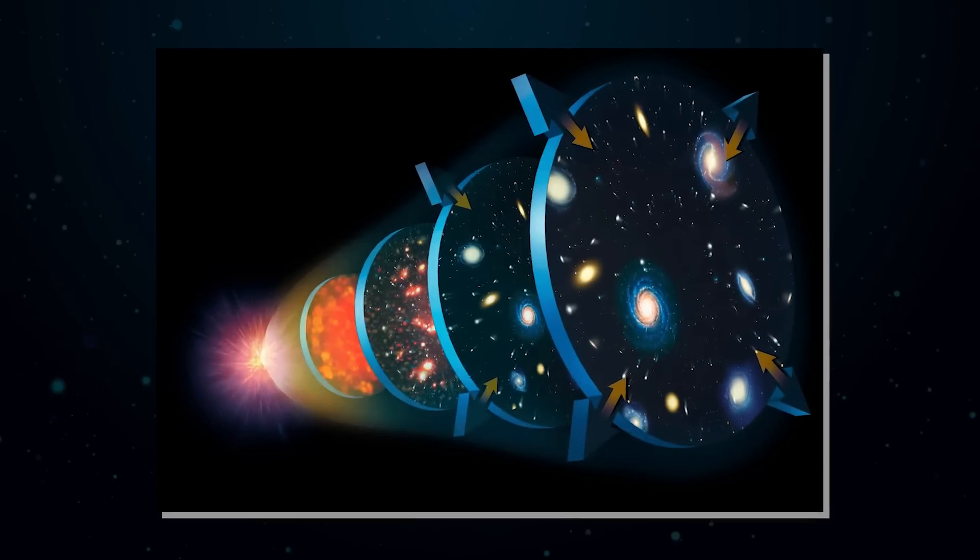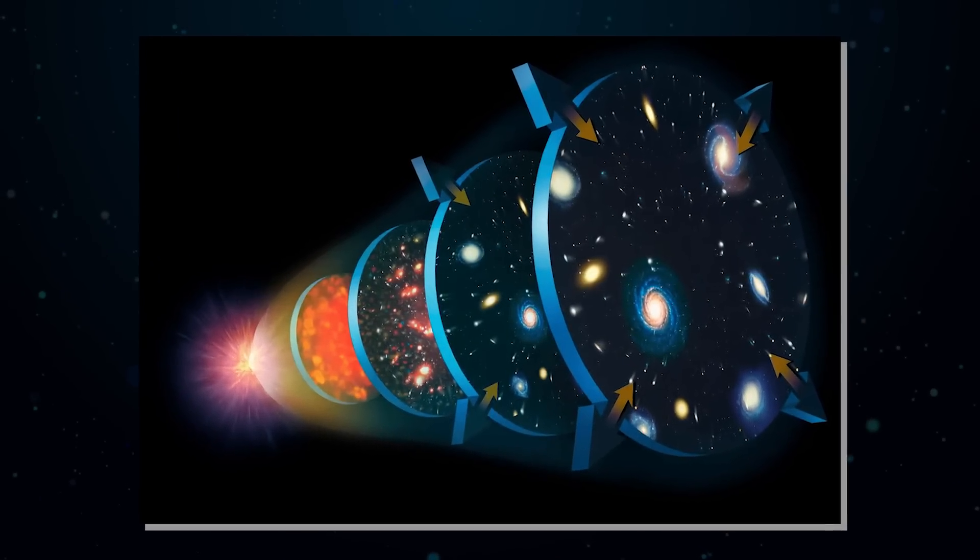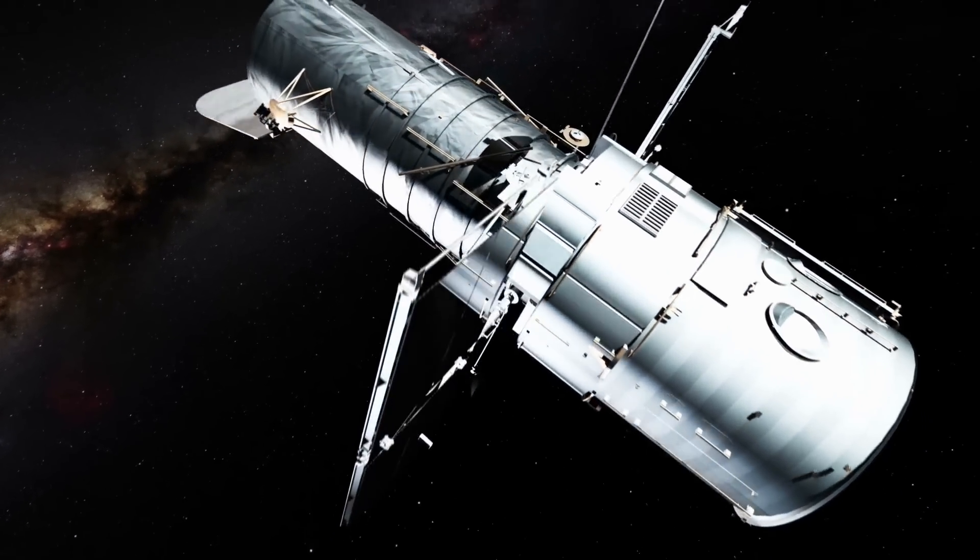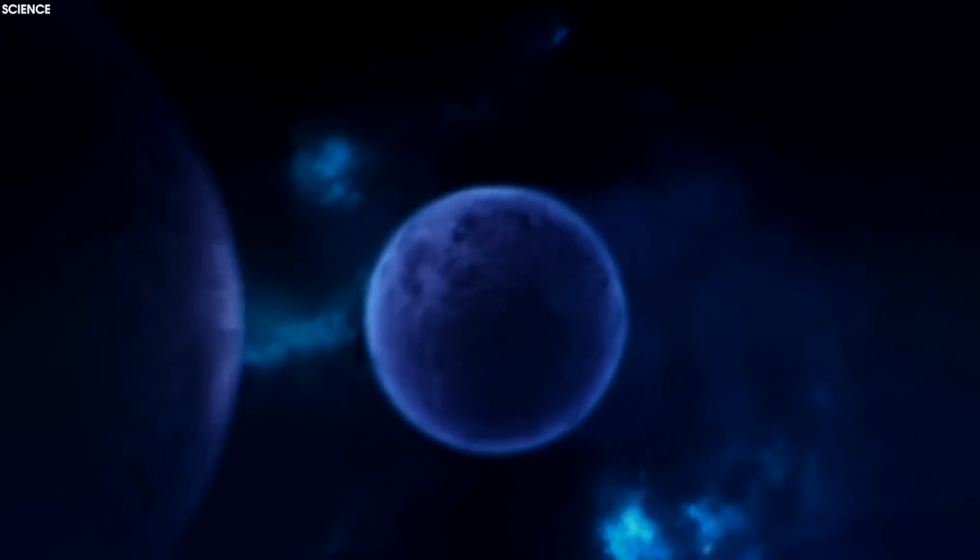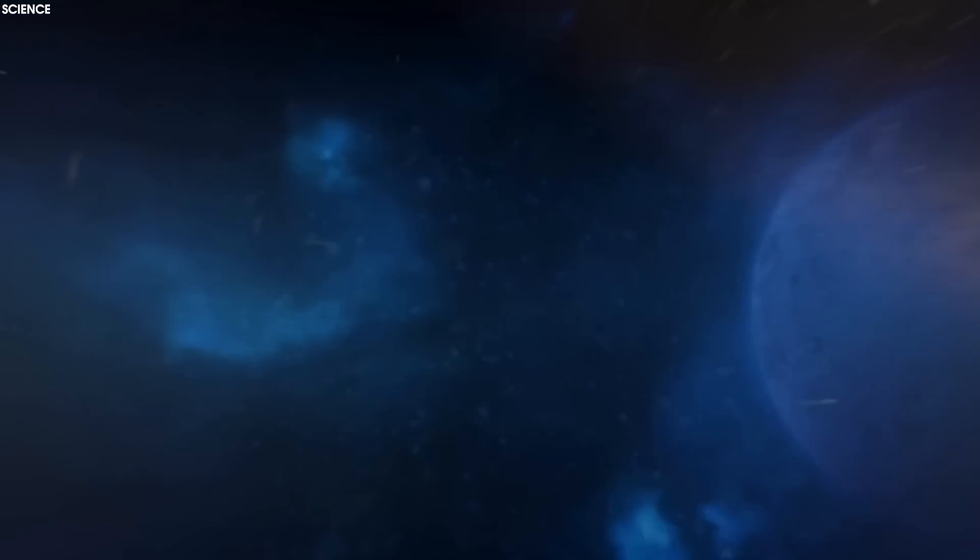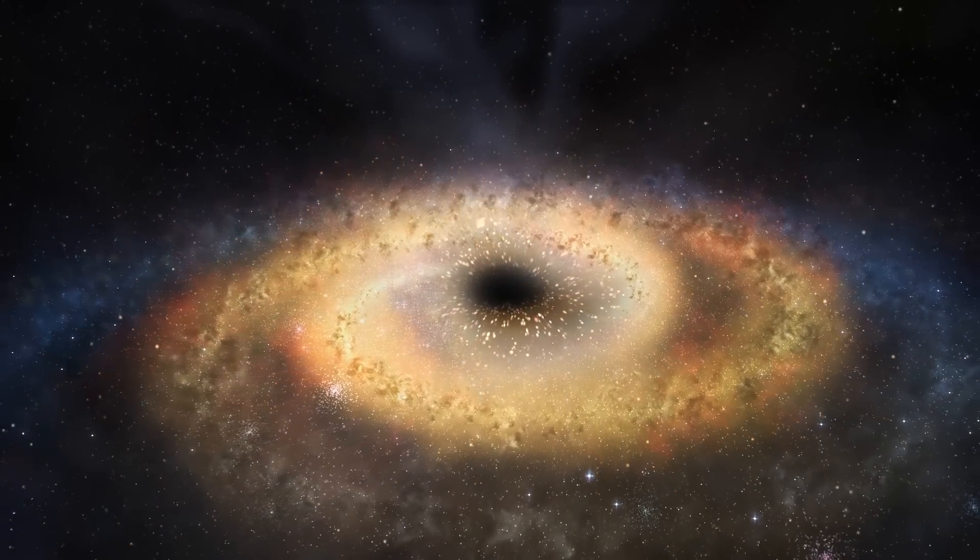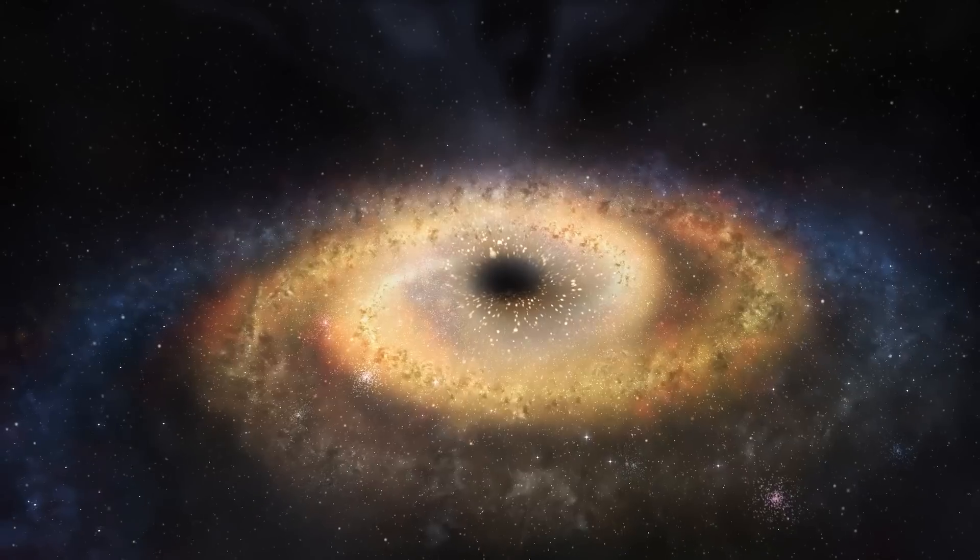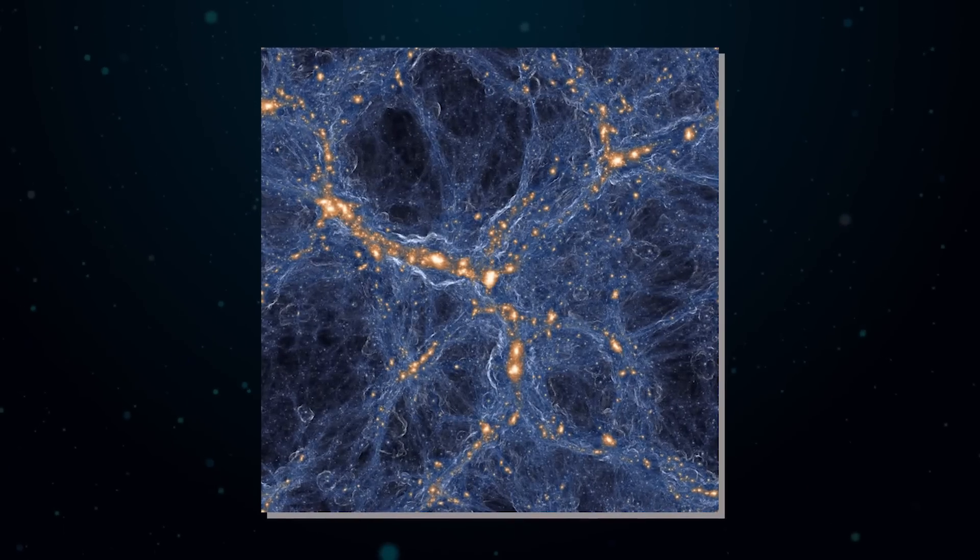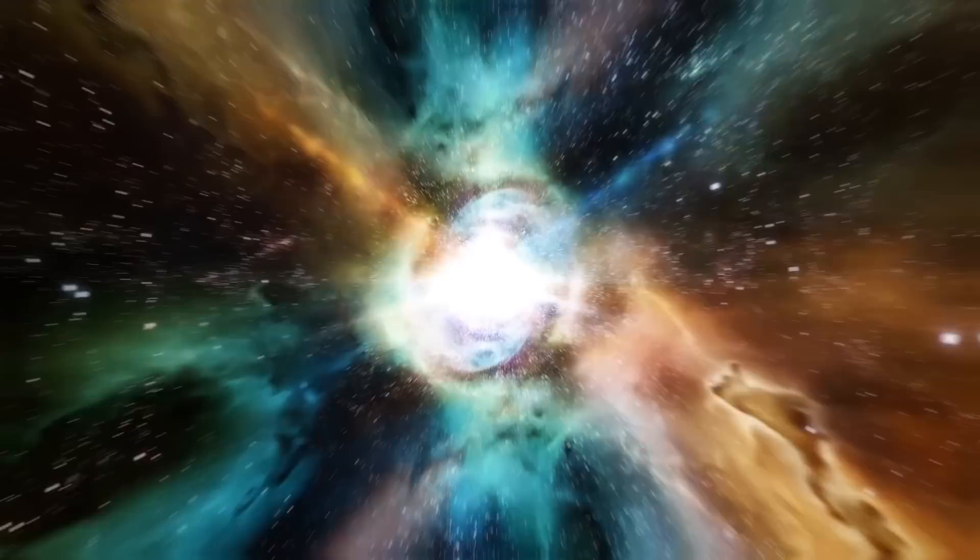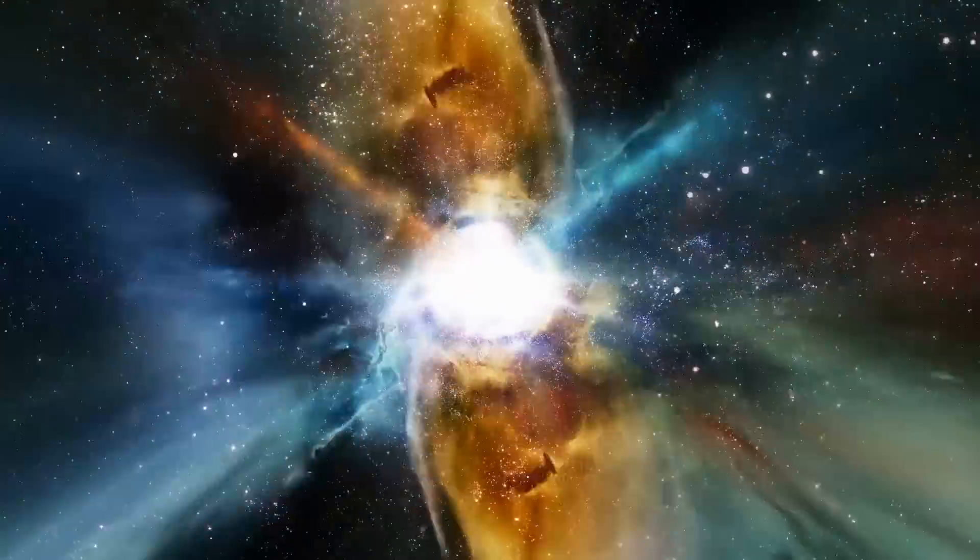Using ever more powerful supercomputers to simulate cosmic history, and ever bigger telescopes to test the results of those simulations, researchers have developed a remarkably complete story. One of the most important aspects of that story is how stars and black holes began forming before galaxies did. The explanation for this is termed hierarchical structure formation, a sub-theory, if you like, of the Big Bang.